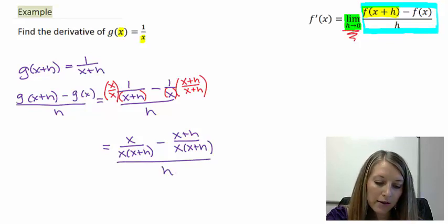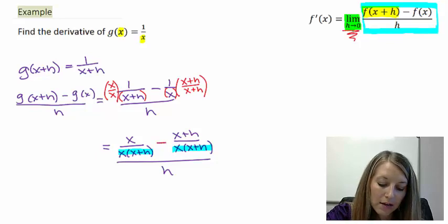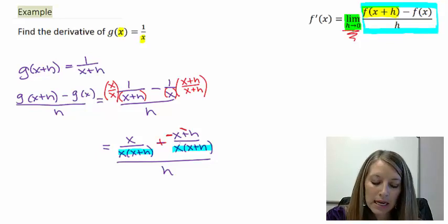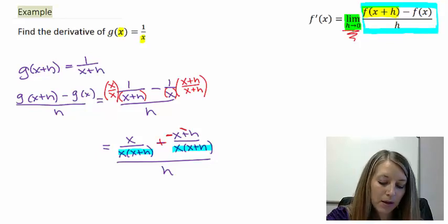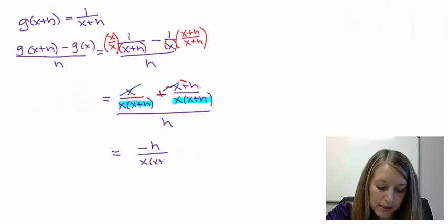So I have an LCD now in these denominators. So I want to now subtract my numerator. This negative goes to my whole second fraction. So I find it best to distribute it through so I don't misinterpret any negatives in those steps. So now, look, my x's cancel out. And so that leaves me with negative h over x times x plus h all over h.